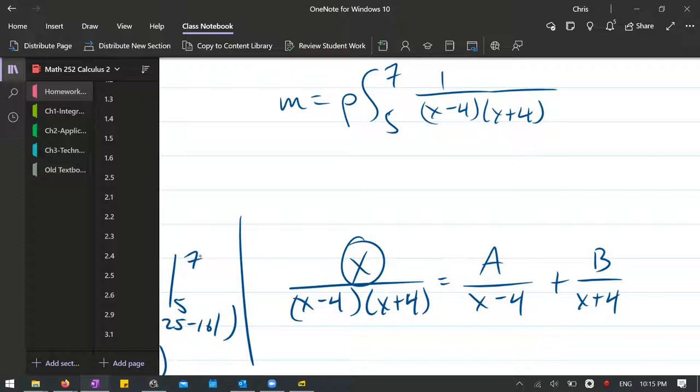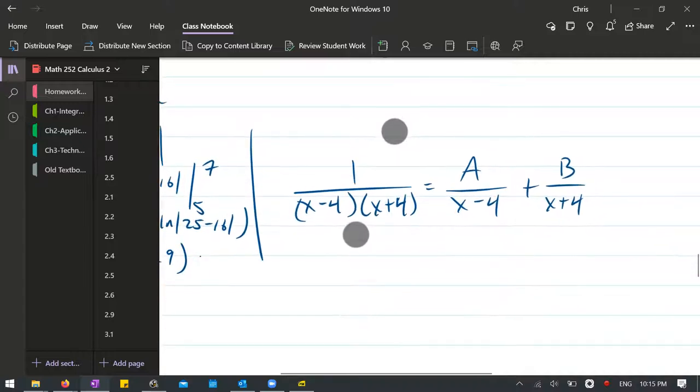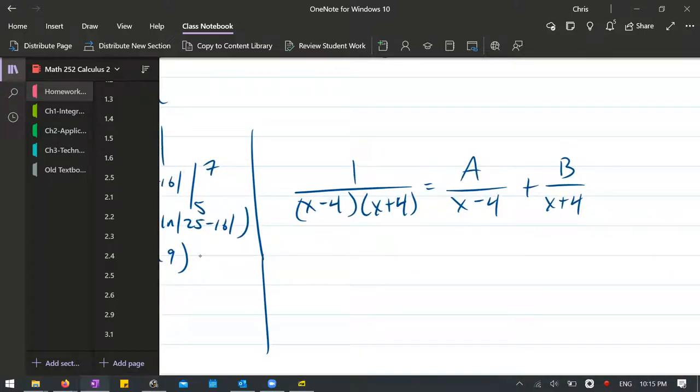So when you plug in some x values, make sure every single x gets replaced by that value. So your first step is always multiply by the denominator. Now that'll cancel out on the left side completely. You're just left with whatever is in your numerator. For me it's 1.